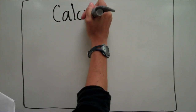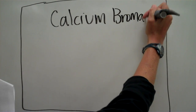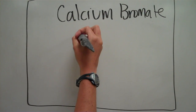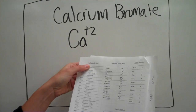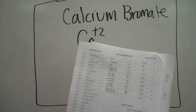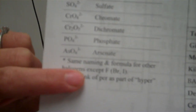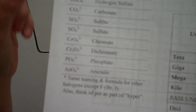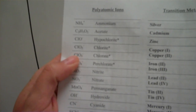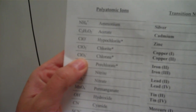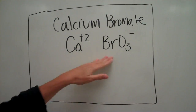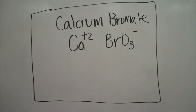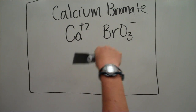The next one is calcium bromate. We look on the periodic table and find calcium is plus 2. Then we look on our polyatomic ion sheet for bromate — but it's not there; we go straight from acetate to chloride. However, at the very bottom of the sheet it says bromine and iodine follow the same pattern as other halogens. So since chlorate is ClO₃ minus, bromate will be BrO₃ minus. We need to balance charges: two positive, one negative.